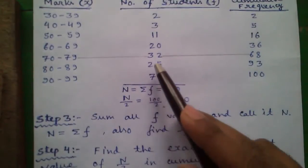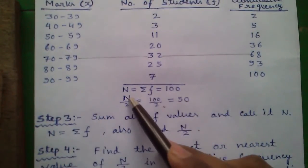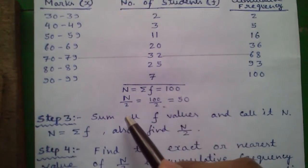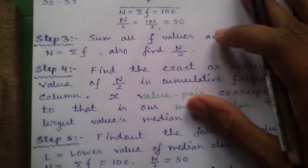Step 3: Sum all f values and call it n. So n is summation of f. Also find n by 2, so n by 2 is 50.